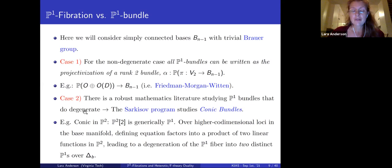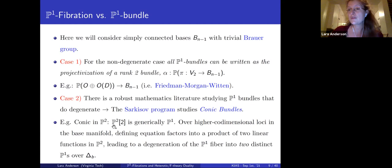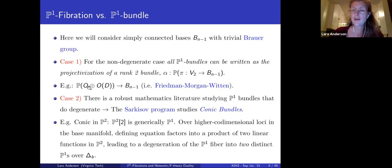For the degenerate case, there is a robust mathematics literature studying P1 bundles that do degenerate, called the Sarkisov program, which studies so-called conic bundles. The terminology arises from birational geometry that maps these degenerations to a description of the fiber as a degree-2 polynomial in CP2. This is generically a P1; however, over higher-codimensional loci in the base manifold, this defining quadratic equation can factor into a product of two linear functions in P2, leading to a degeneration of the P1 fiber into two distinct P1s over some discriminant locus.